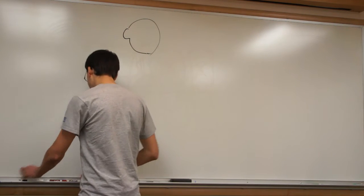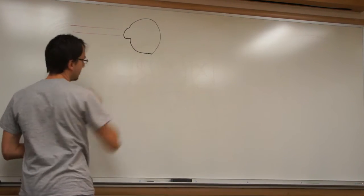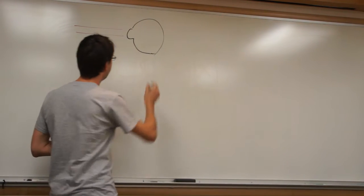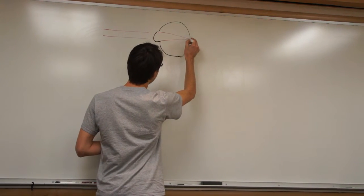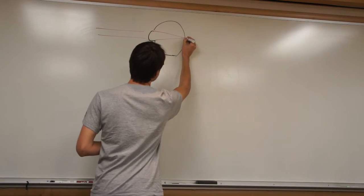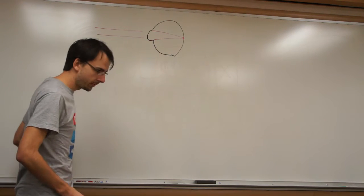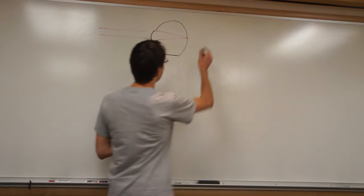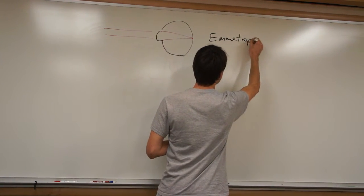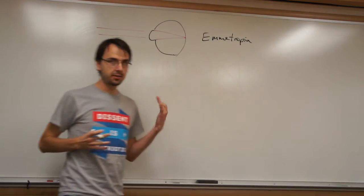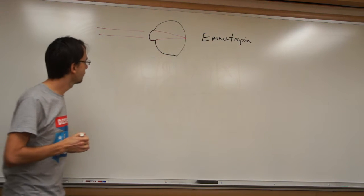And so when you have parallel rays coming in, in a perfectly functioning eye, what's going to happen is that these rays are going to focus right on the retina. So it's going to focus to a point right here. And this is what's called emetropia. So that's somebody that doesn't need glasses, their vision works great, everything focuses where it should.